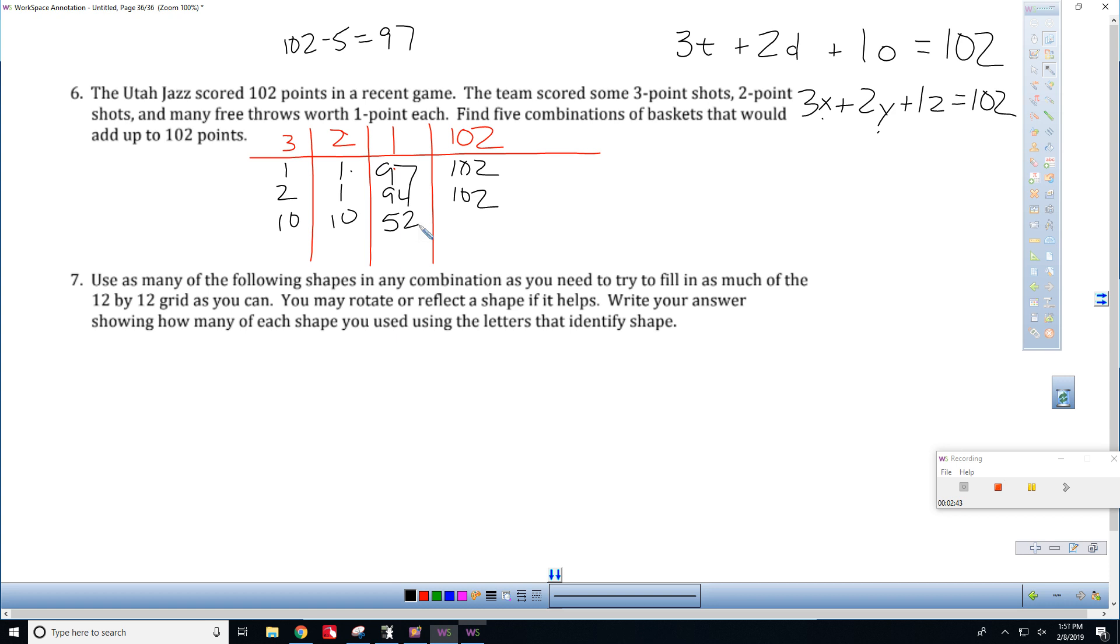What if we did 20 and 20? 23 that gets us to 60, 22 that gets us to 40. 60 plus 40 is 100. Well then we only had two free throws.